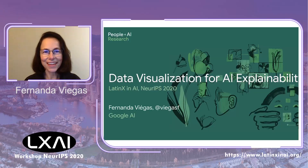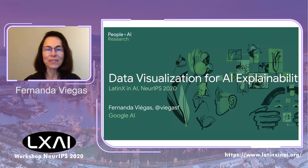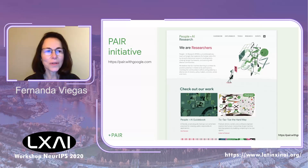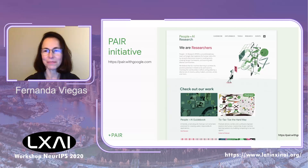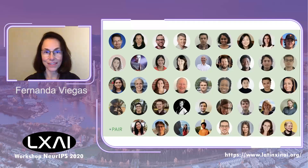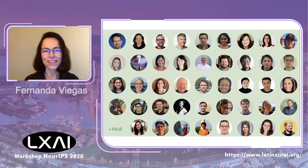Hello, I'm Fernanda Viegas. I'm a principal scientist at Google AI, and today I'm going to talk to you about data visualization for AI explainability. At Google, I co-lead the PAIR initiative, which stands for People Plus AI Research, and our mandate is to build human-centered AI systems. The work I'm going to show today is done by a lot of the folks on this wonderful team — this is the PAIR team at Google.